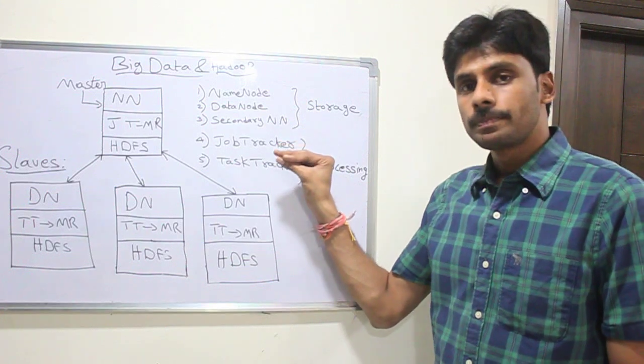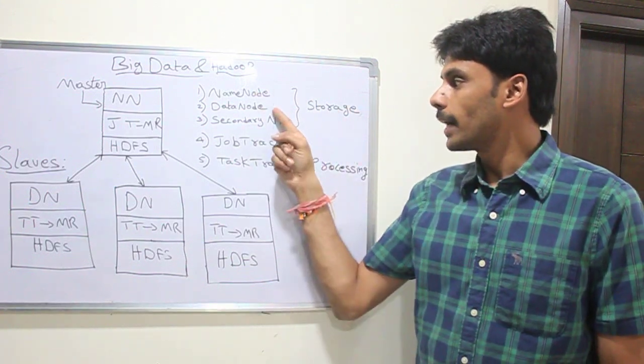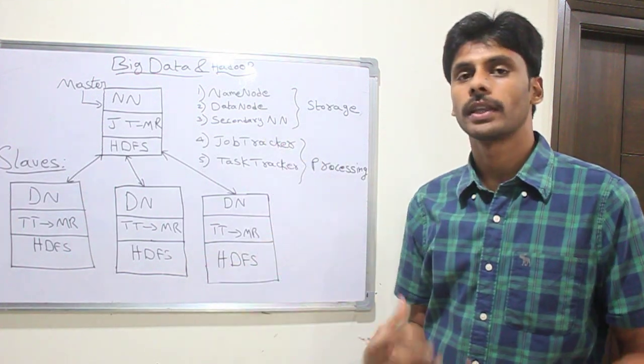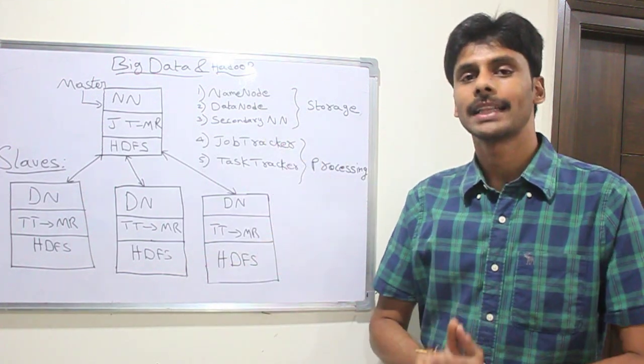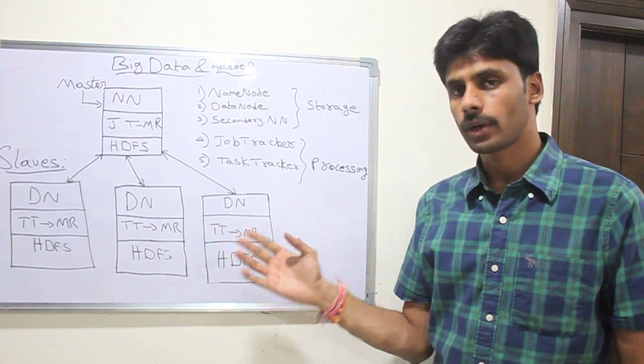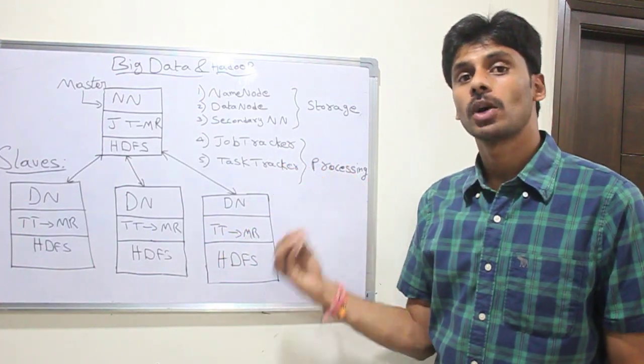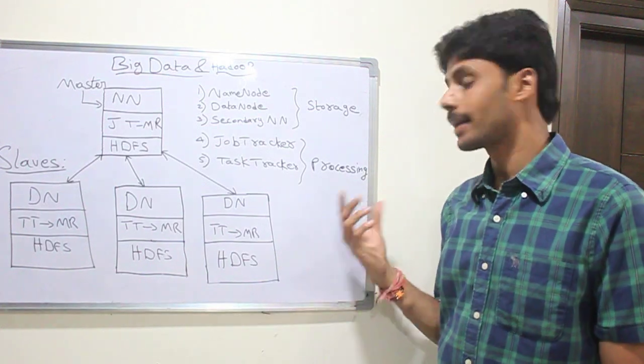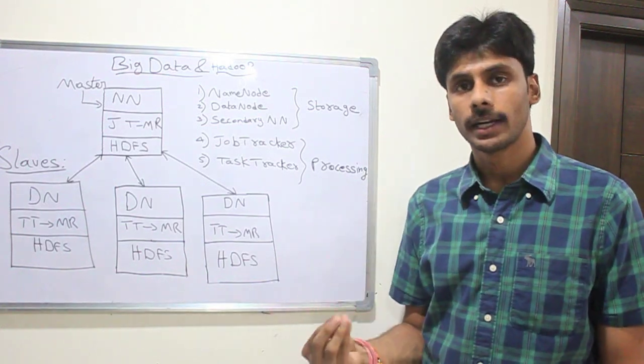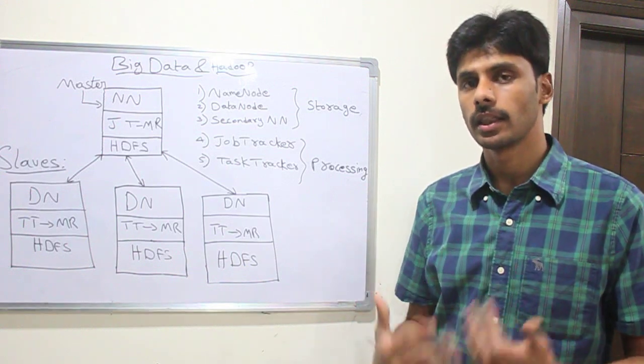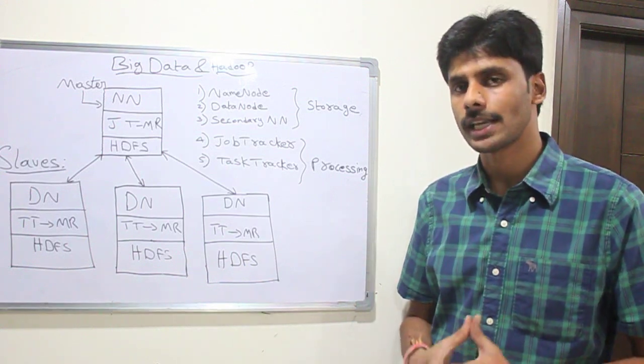These daemons work - these three daemons NameNode, DataNode, Secondary NameNode deal with HDFS. They take the data and then store them across HDFS. The last two, JobTracker and TaskTracker, are responsible for running the MapReduce jobs to process the data or to analyze the data and to derive the output that helps us to make some decisions as an organization.